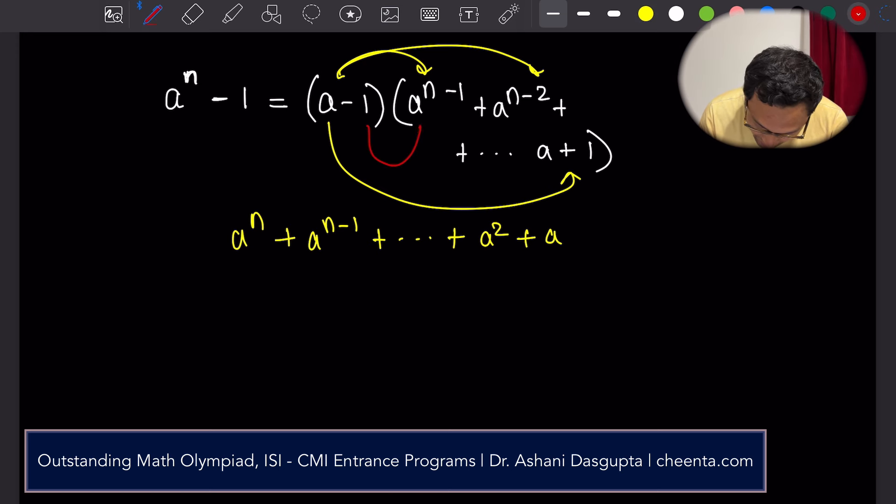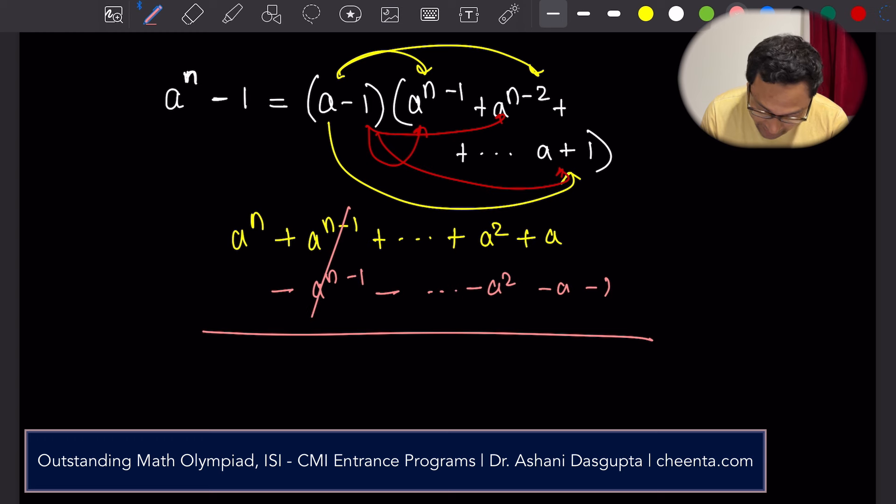And if you multiply minus 1 with everything, then you will have minus a to the power n minus 1, minus a squared minus a minus 1. If you add things up, everything will cancel off and you will have a to the power n minus 1, which is what we started off with.